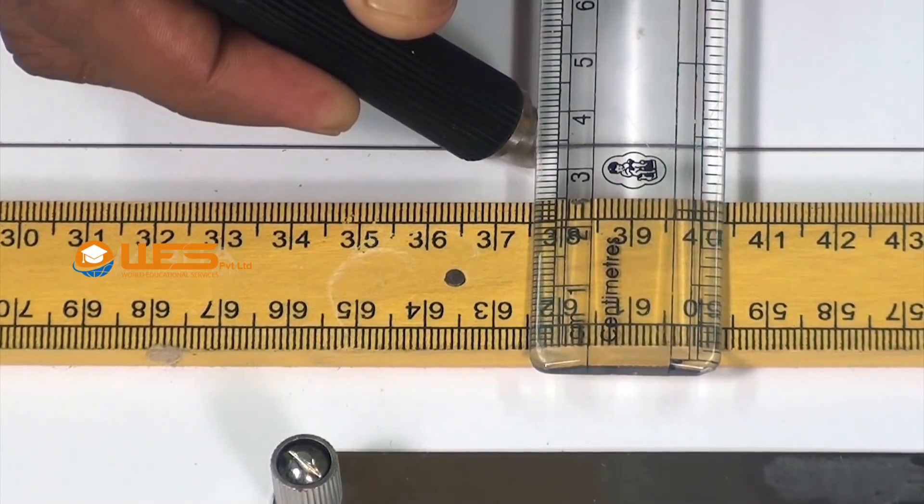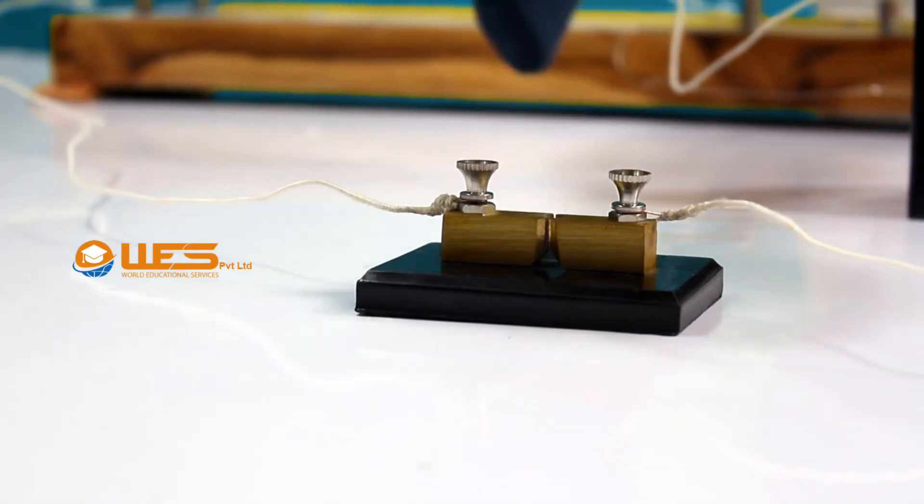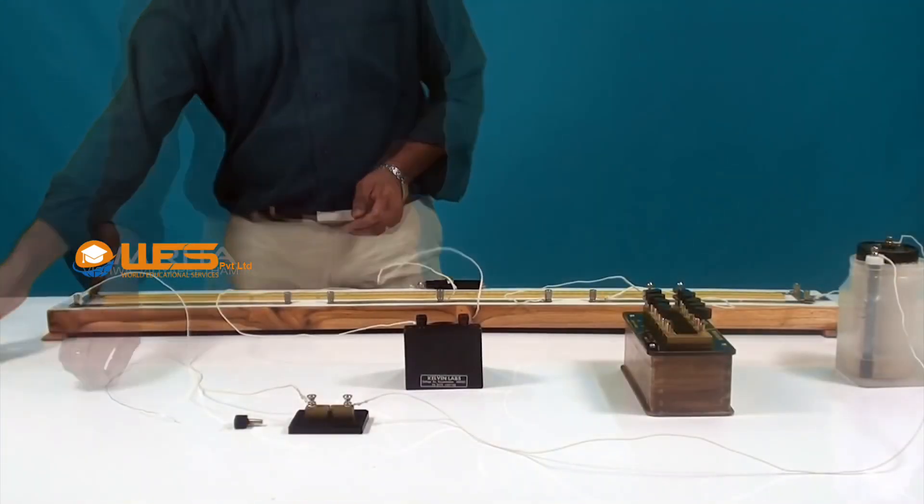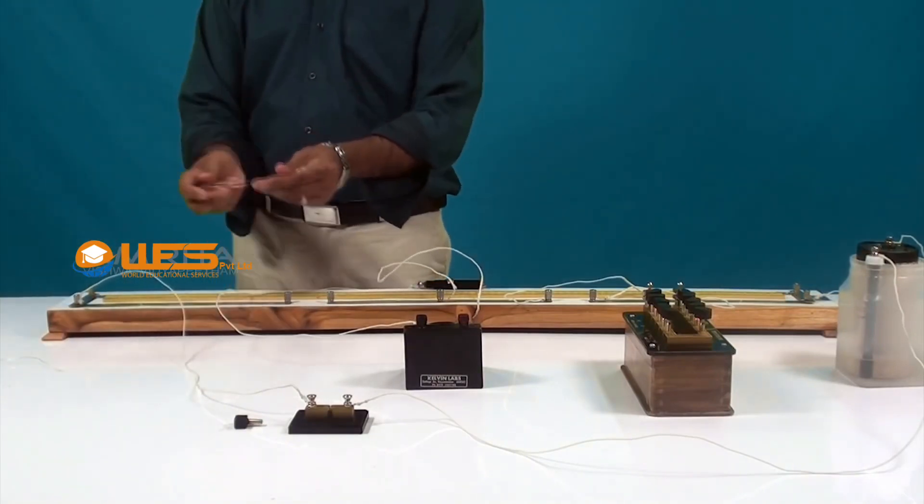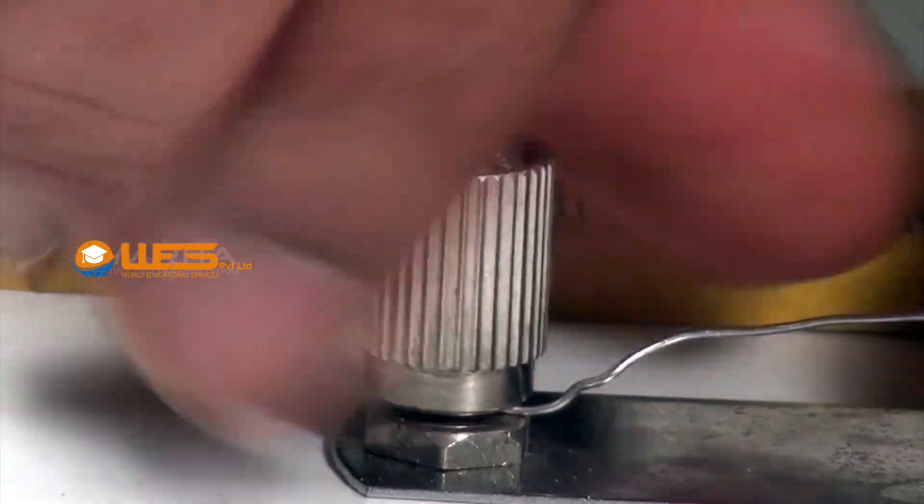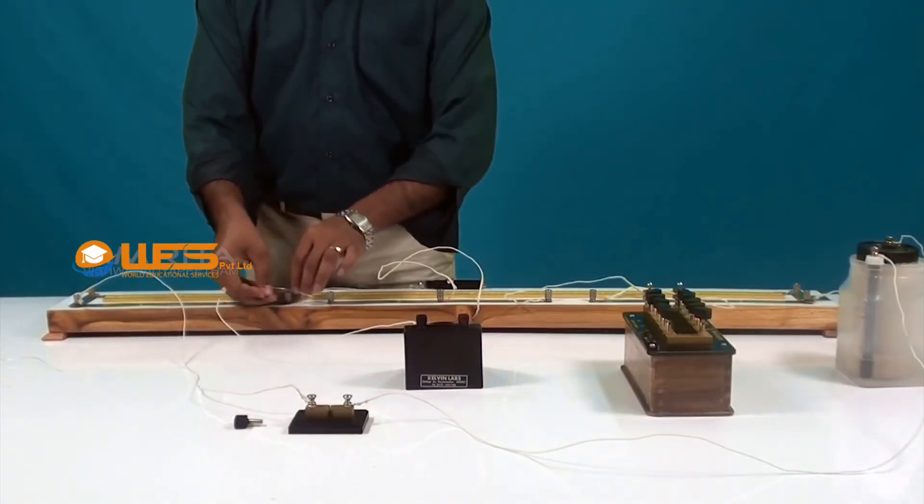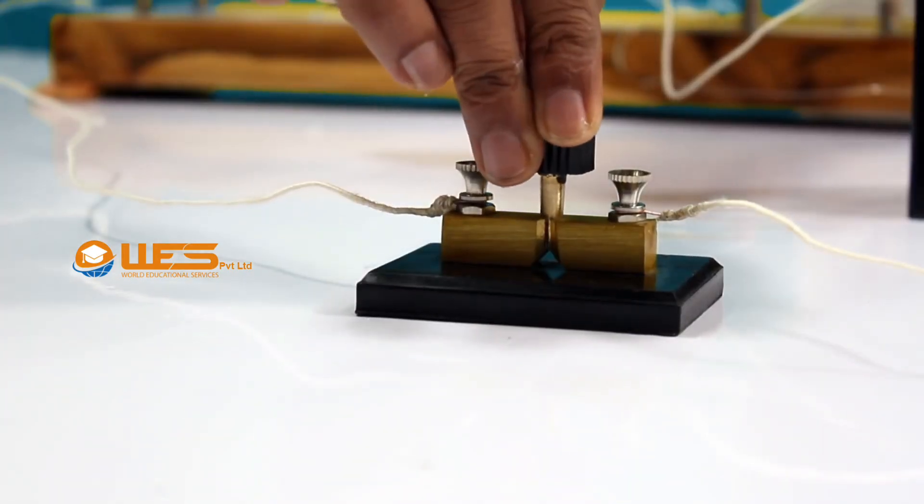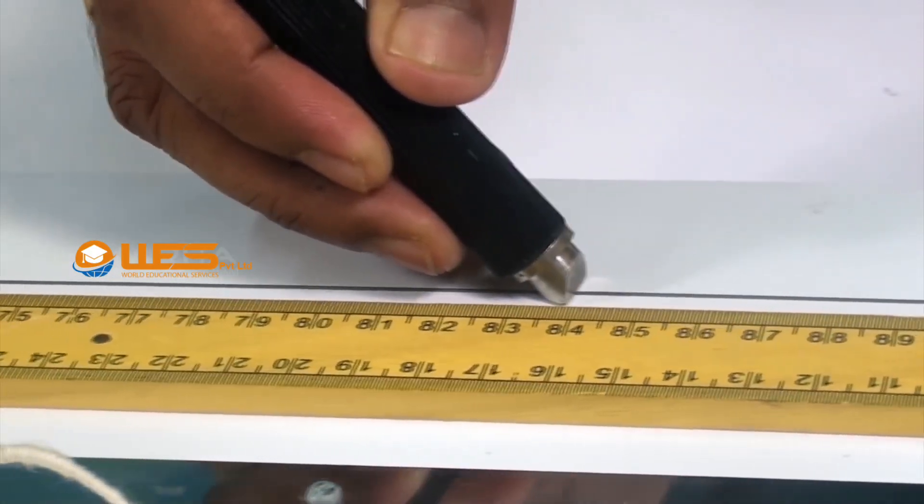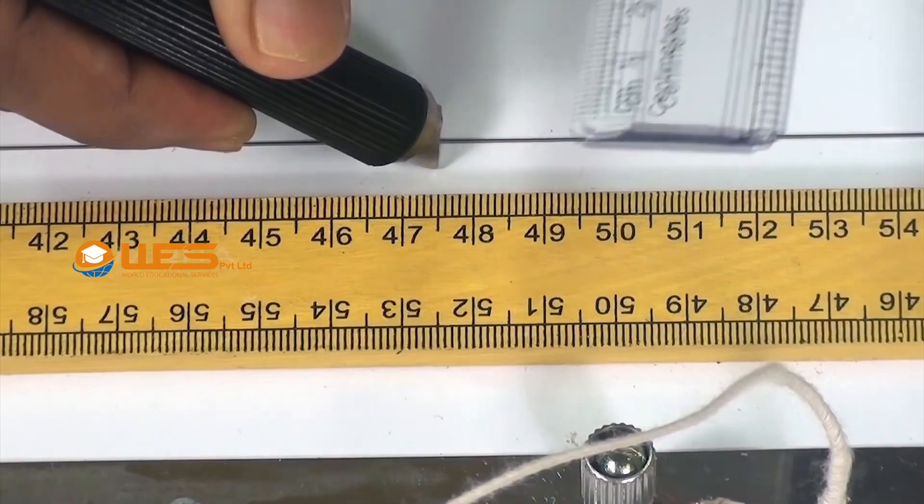After taking these measurements, remove the key and then the resistance wire R1. Now, take the new resistance wire R2 and connect it in gap G2 of the meter bridge. Insert the key and repeat the same steps for finding the mean resistance of resistance wire R2.